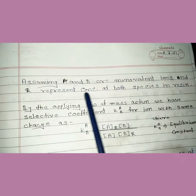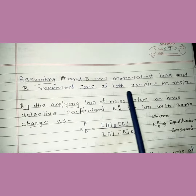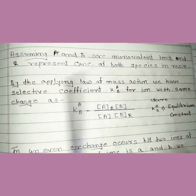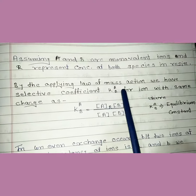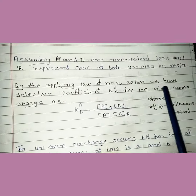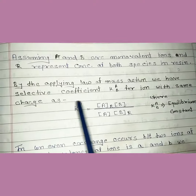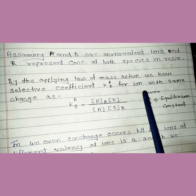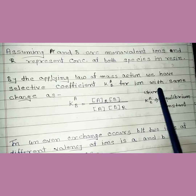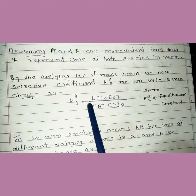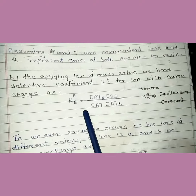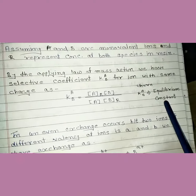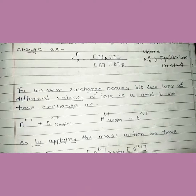Given that A and B are monovalent ions, we consider the concentration of both species in the resin. By applying the law of mass action, we can derive the selectivity coefficient Kav as the equilibrium constant for the ion exchange reaction.